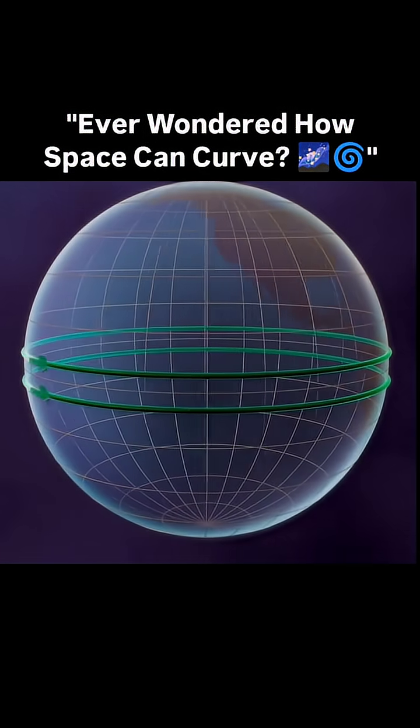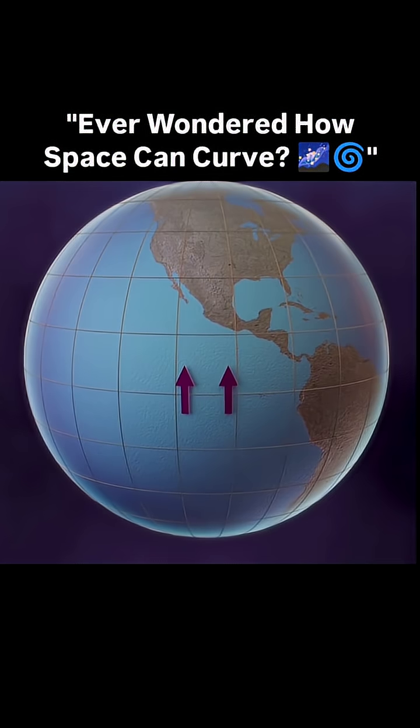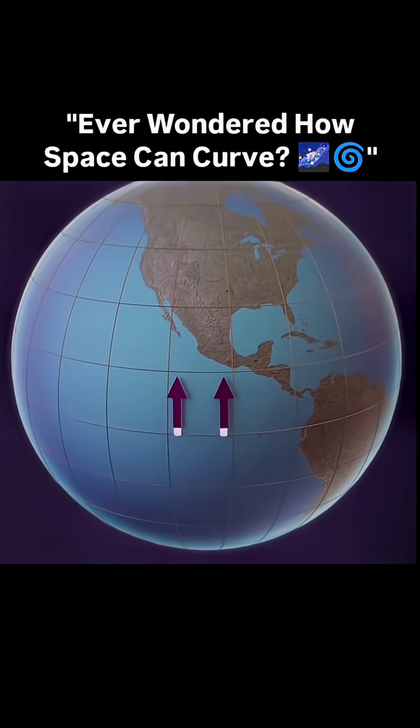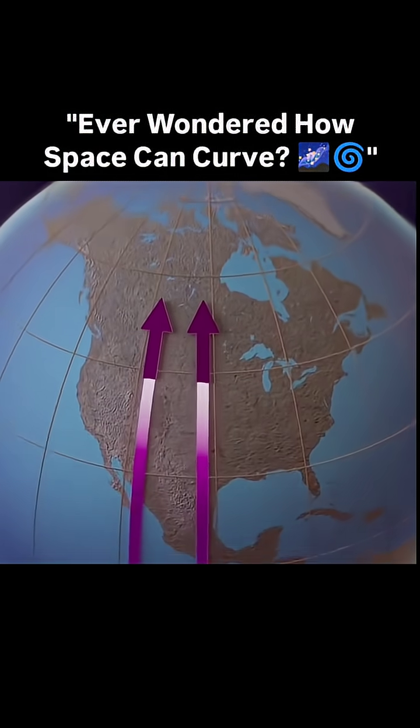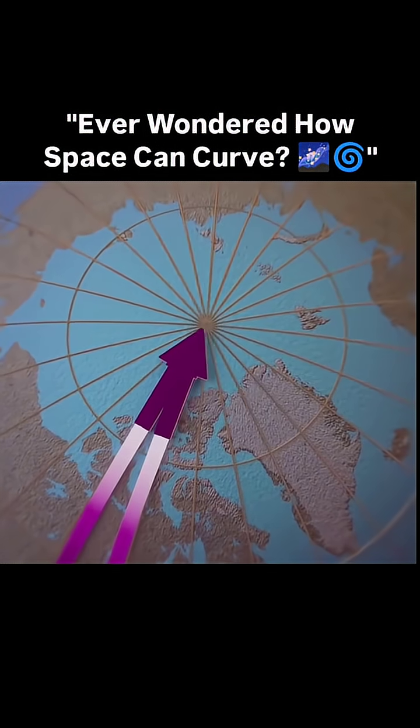Lines running east-west will always remain parallel. But if you trace two paths that start at the equator a certain distance apart and travel precisely due north, you'll see a different result. The further north they move, the closer together they become, until they converge together at the north pole.